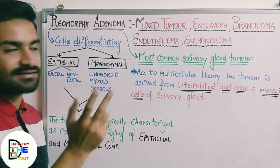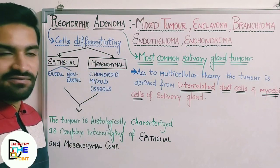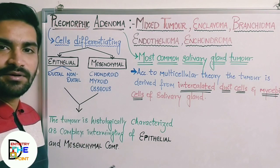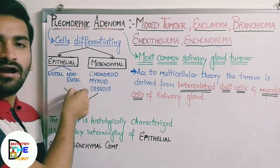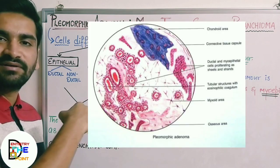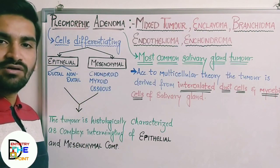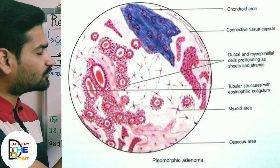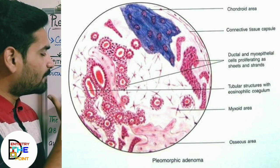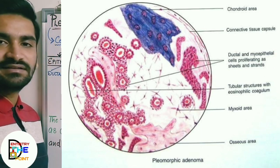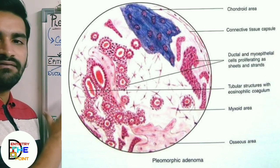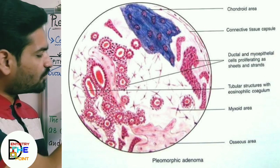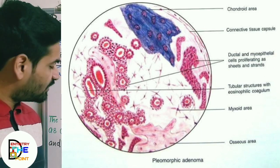Pleomorphic adenoma consists of cells differentiating into two categories: the epithelial component and the mesenchymal component. The epithelial component has two types of cells — ductal (with ducts present) and non-ductal (without ducts). From the mesenchymal component, we have three types: chondroid (resembling connective tissue), myxoid (resembling mucus), and osseous (resembling bony structure).